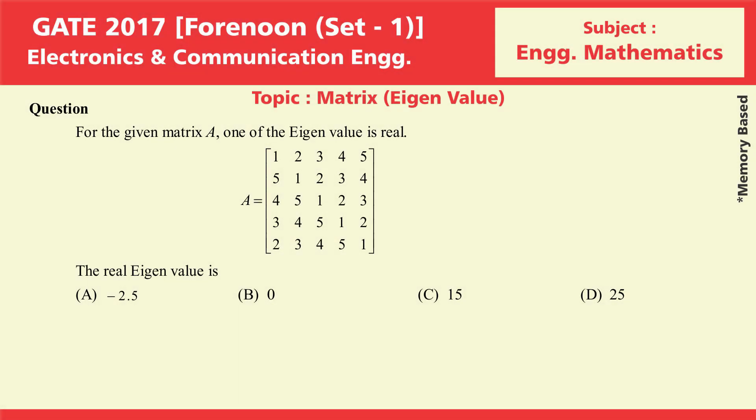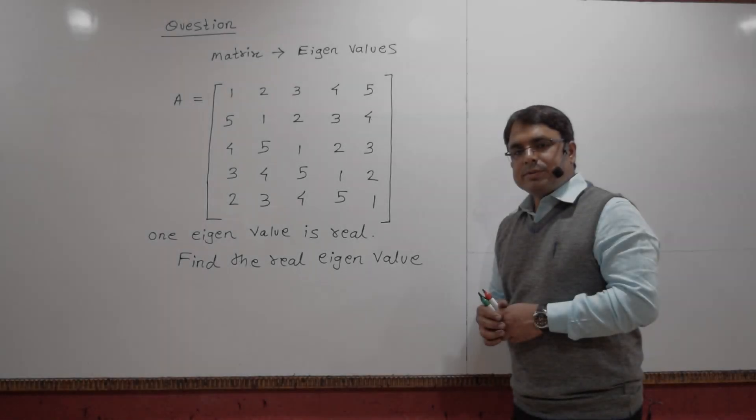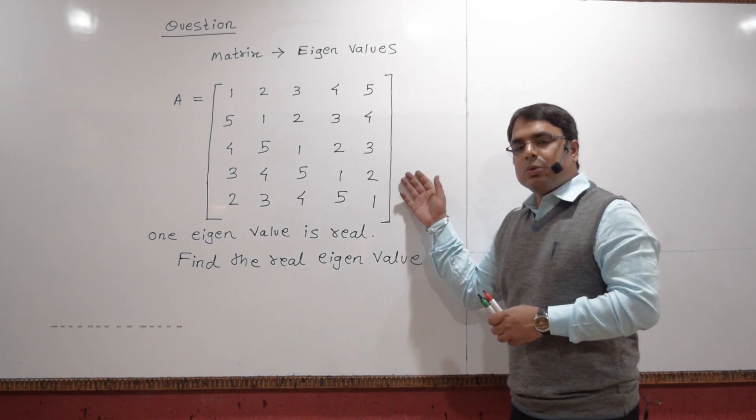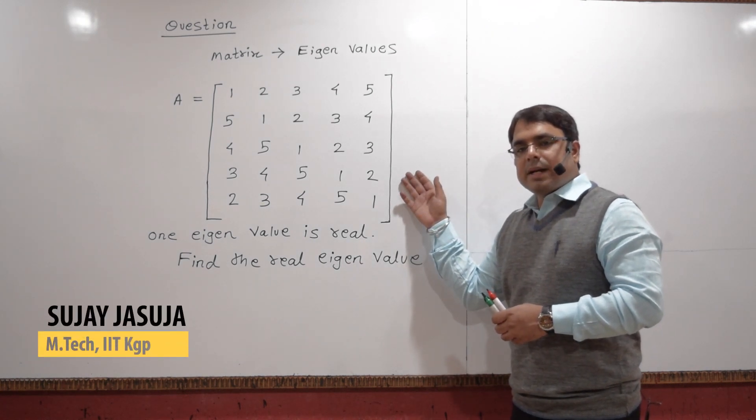In the given matrix, one of the eigenvalues is real. The real eigenvalue is: option A, minus 2.5; option B, 0; option C, 15; and option D, 25.